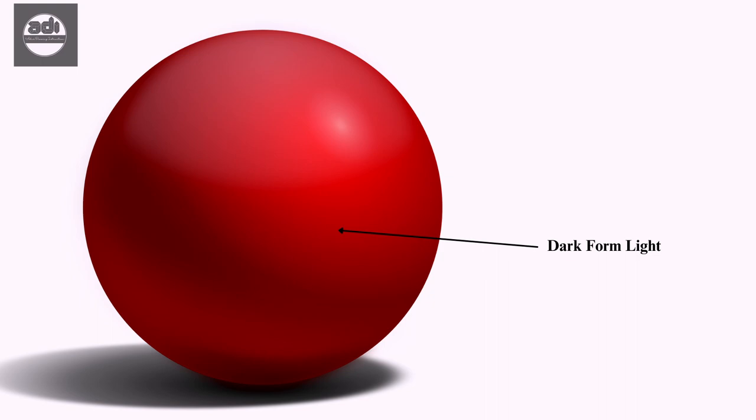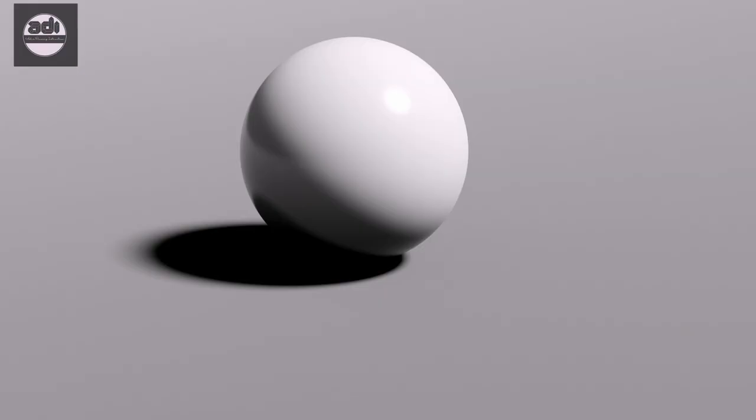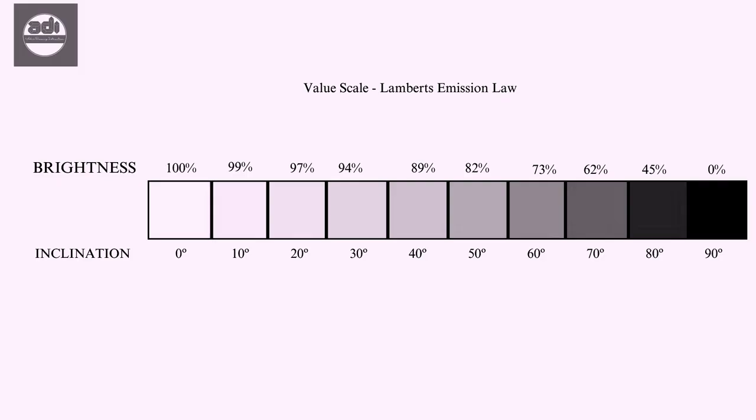Dark form light is that part of the half tones that is darker than the mid tones and is lighter than the reflected light in the shadow family. This is the darker value of the half tones used to describe the form shadow on the lit side. Dark form light gets darker faster as it approaches the shadows as explained by Lambert's emission law.